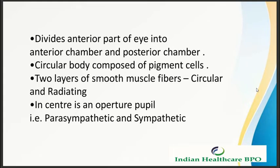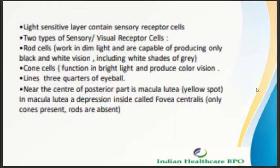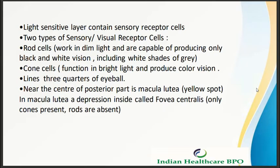The retina is the innermost lining of the eye — a delicate structure well adapted for stimulation by light rays. The light-sensitive layer contains sensory receptor cells of two types: rod cells, which work in dim light and are capable of producing only black and white vision including shades of gray; and cone cells, which function in bright light and produce color vision. The retina lines three quarters of the eyeball. Near the center of the posterior part is the macula lutea, also known as the yellow spot. Within the macula lutea is a depression called the fovea centralis, where only cones are present and rods are absent.